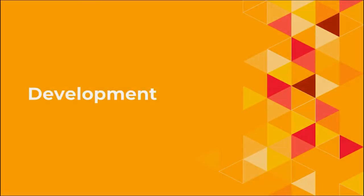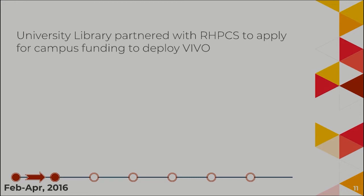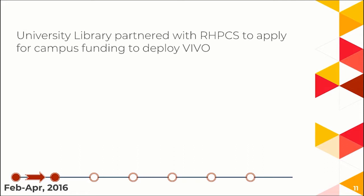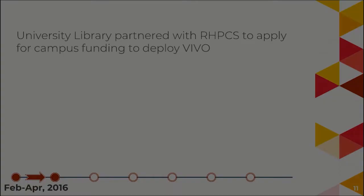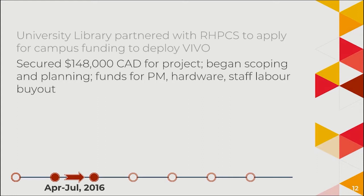The idea began percolating in 2015, and in 2016 we put together a proposal with RHPCS to the provost to do something about this. We went after $150,000 to set up what we said we were going to do: set up a Vivo instance with attractive, consistent, accurate — at least stub shell — profiles for all faculty at McMaster, bring in publications from external sources, and persuade faculty that there's value in having a public profile. We got $148,000 of the $150,000, and used that money to hire a project manager and do a little bit of hardware purchasing.